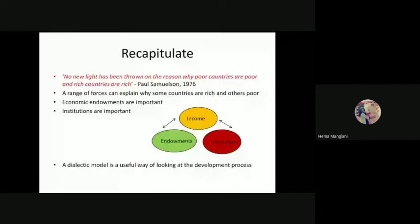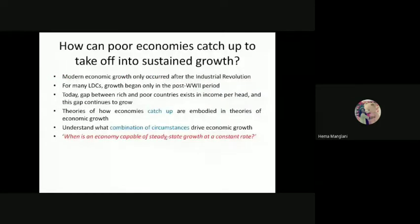How can poor economies take off into sustained growth? As Solow talked about how poor countries would converge to developed countries even at a faster growth rate, because they might have lower diminishing returns. But the analysis of Harrod and Domar is not talking about diminishing returns, though there could be the capital-output ratio and productive capacity, and there can also be depreciation through the production process. Modern economic growth only occurred after the industrial revolution.